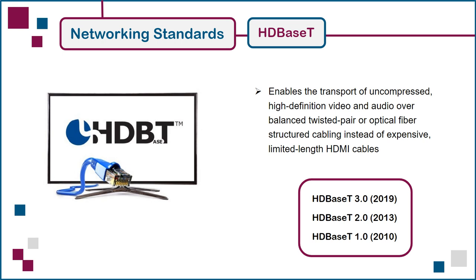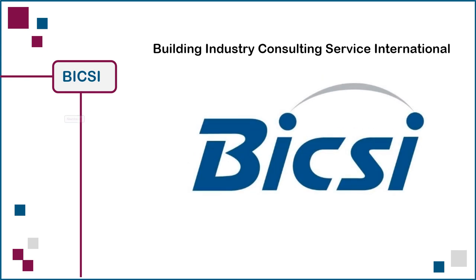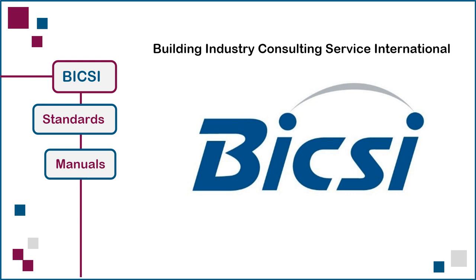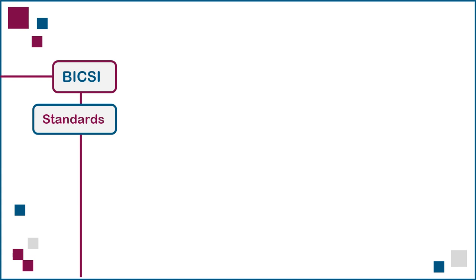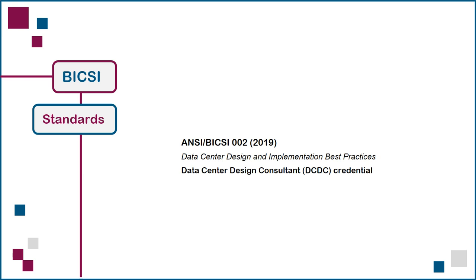Next, we jump back to structured cabling standards with a look at BICSI. The Building Industry Consulting Service International (BICSI) develops both standards and reference manuals containing industry best practices for structured cabling professionals. BICSI standards enhance and expand content found in TIA structured cabling standards, and have been adopted as national standards by ANSI. ANSI-BICSI-001 covers educational institutions, 002 is for data centers and serves as the foundational reference for the Data Center Design Consultant (DC-DC) credential, and 003 provides guidelines for building information modeling (BIM) project documentation.